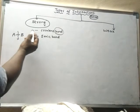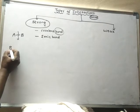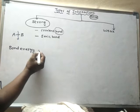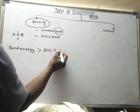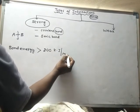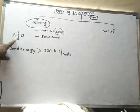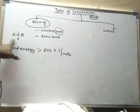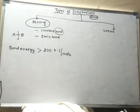In this type of bonds, the bond energy will be greater than 200 kilojoules per mole. When the bond energy is very large — about 200 kilojoules per mole — then the interactive forces between atom A and B are said to be strong forces, or strong interactions.